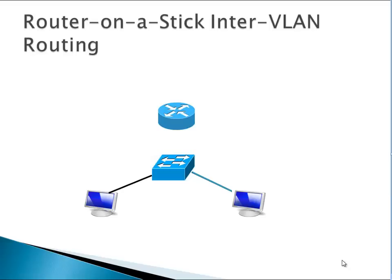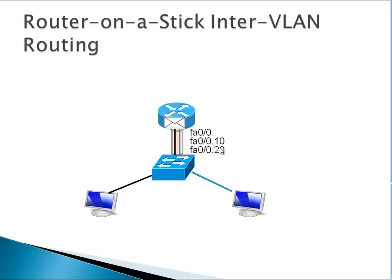Before we had two cables, now we only need one cable. On that interface - say fa0/0 - we create two virtual interfaces. To create a virtual sub-interface you type fa0/0.10 for example, and then fa0/0.20. The 10 and 20 represent the VLAN numbers. You can put any number, but we usually put the VLAN number so we know which sub-interface belongs to which VLAN. When a packet comes in from one VLAN it goes through that virtual interface and comes back out the same physical interface on the other virtual interface.